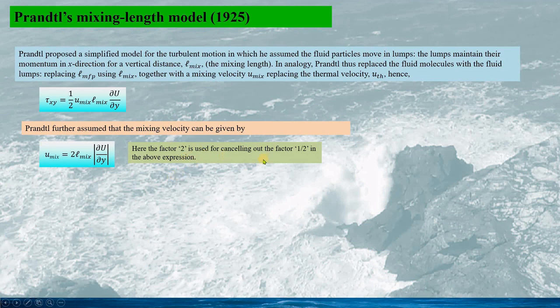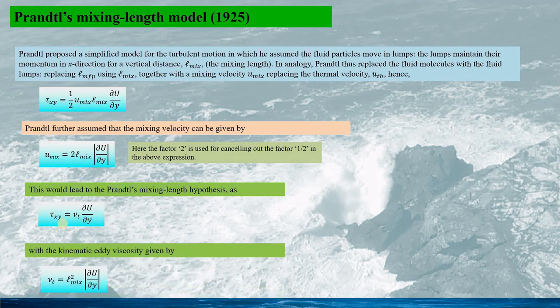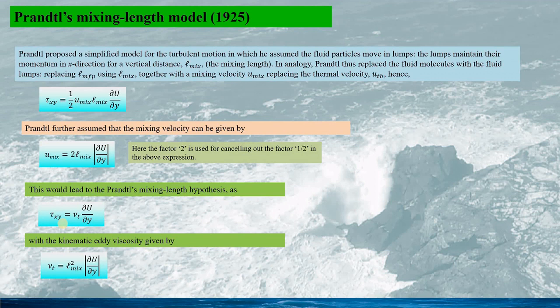Here the factor 2 is used for canceling out the factor 1 over 2. This would lead to the Prandtl's mixing length hypothesis as tau_xy equals to nu_T times capital U gradient with regard to y. And here the kinematic eddy viscosity is given by this equation.